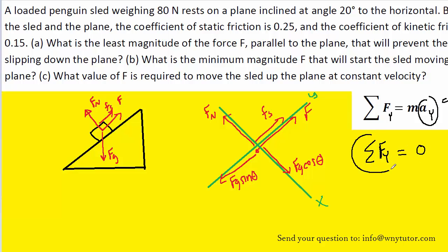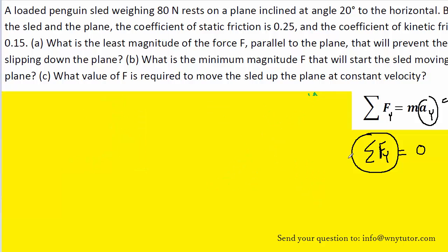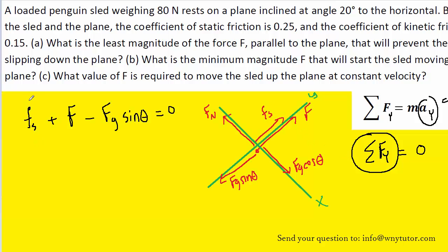Let's go ahead and fill in all the forces in the direction that we've called the y axis. Notice that both Fs and the pushing force F are positive. We can arbitrarily call this direction along the y axis positive. And then Fg sine theta would therefore be negative because it's pointing in the opposite direction.